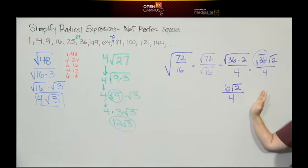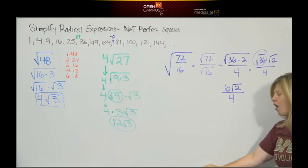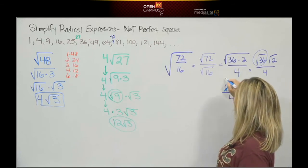Everybody look closely. Can this be the final answer? Think back to what you learned about fractions. All fractions have to be what? That's right. Reduced. 6 and 4 have a common factor of 2. So if we divide 6 by 2, we get 3.